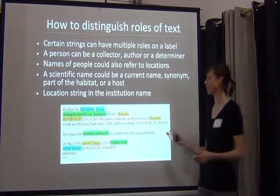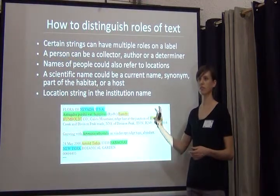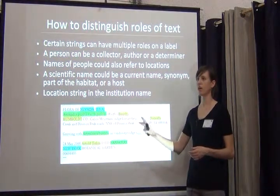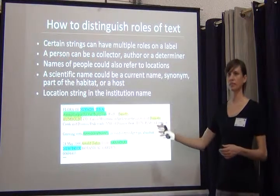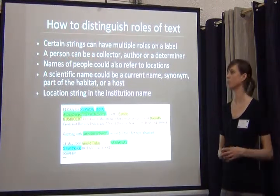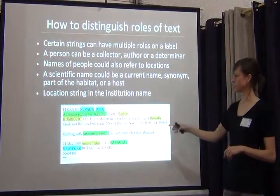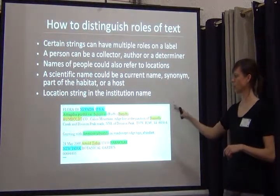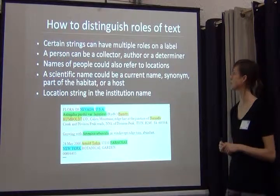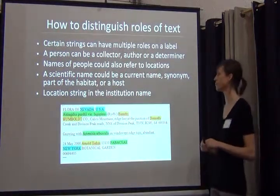So now that we have this big massive text, it's all combined together in one field. What do we do with it? How do we get this into database fields in a better usable format? We're going to have to look at this and try to distinguish what part of the text is being used for what purpose. Certain strings can have multiple roles on a label.